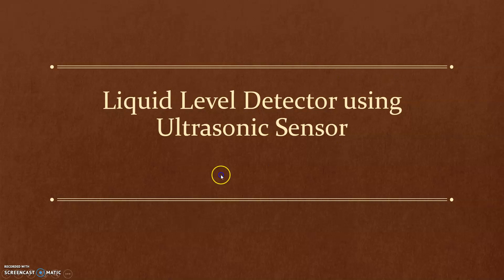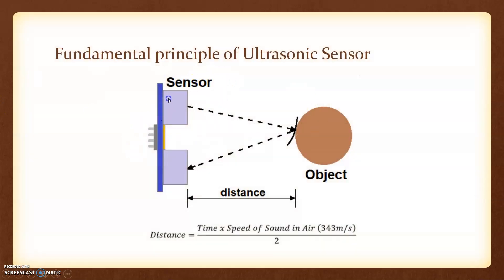So what is the fundamental working principle of the ultrasonic sensor? Basically in this ultrasonic sensor there are two main parts: one is TX and another one is RX. TX means transmitter, RX means receiver. From the transmitter side we send one ultrasonic signal — a high frequency sound wave which is not audible by the human ear. The signal will go and hit any object, and some part of the signal will reflect back, and that reflected signal will be detected by the receiver.